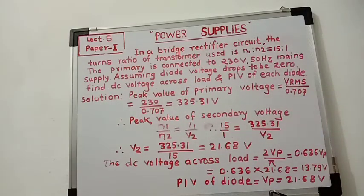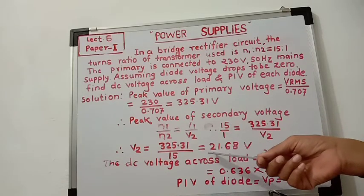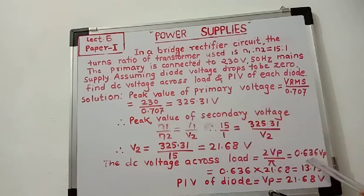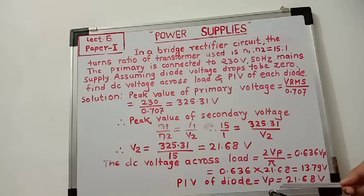Now we have to calculate PIV. In a bridge full wave rectifier circuit, the PIV of each diode is equal to VP, that is the secondary peak voltage. VP is 21.68 volts, so the PIV of each diode is 21.68 volts. We will stop here.